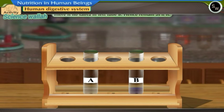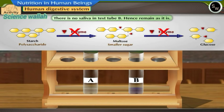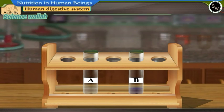In test tube B there is no saliva added, hence starch remains as it is.